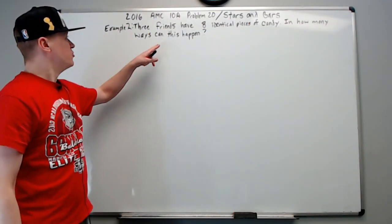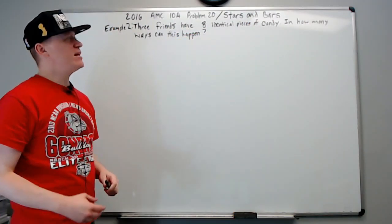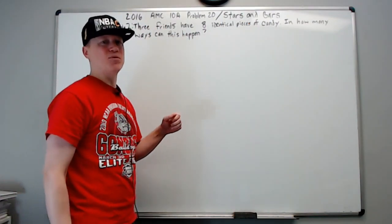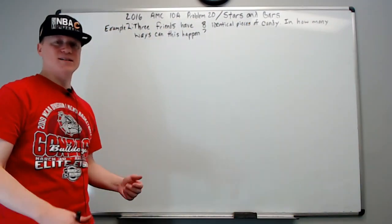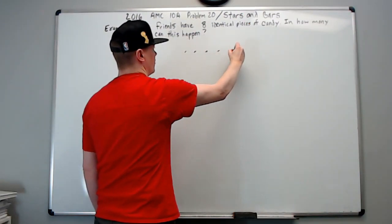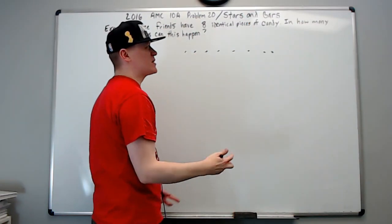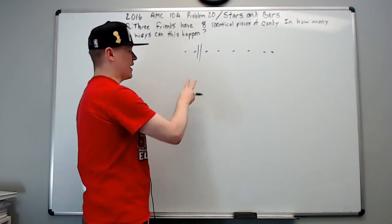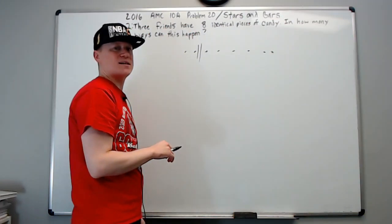Example two: three friends have eight identical pieces of candy — in how many ways can this happen? A slight change from example one: in example one, they each had to have at least one. In this one, there's no guarantee. With eight dots and seven gaps, you can now place two dividers in the same gap, giving results like two, zero, six — that's okay.